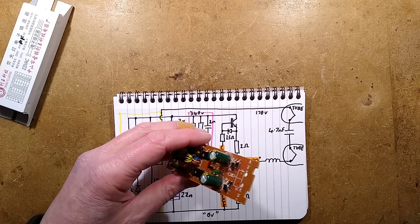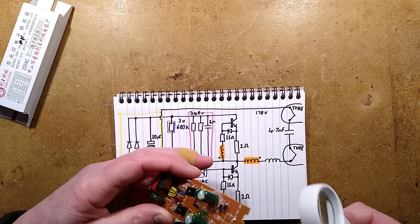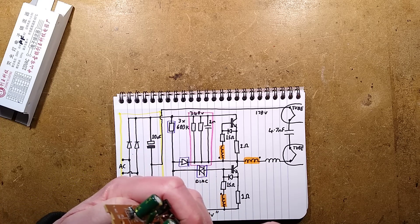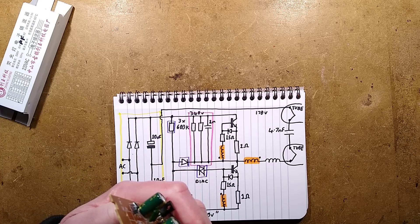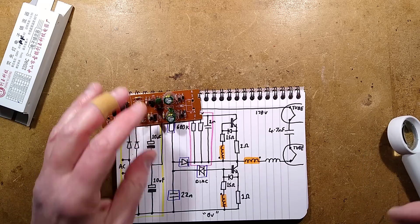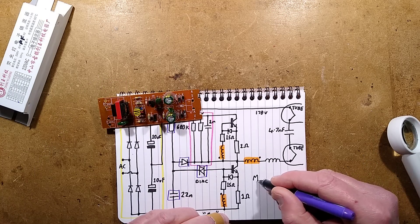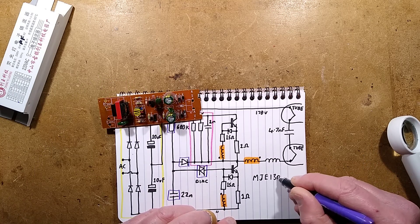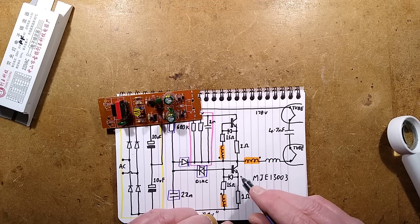Now what are these transistors I didn't note this down but I completely forgot where they were. They are MJE13003, MJE it doesn't actually say MJE but that's a 13003 which is a very standard transistor used in these. It's commonly used in many of these ballasts.